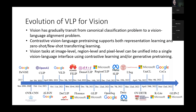After the coffee break, we will start VLP for vision. There has been surging research interest in how to develop VLP methods to solve traditional computer vision problems such as classification, object detection, and object segmentation. We see that vision has gradually transitioned from a canonical classification problem to a vision-language alignment problem. Contrastive vision-language pre-training can support both representation learning and zero-shot or few-shot transfer learning. We strongly believe vision tasks at image level, region level, and pixel level can be unified into a single vision-language interface using contrastive learning and generative pre-training.